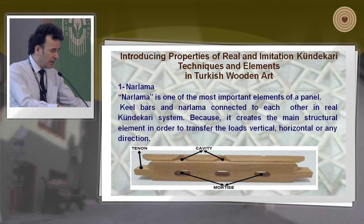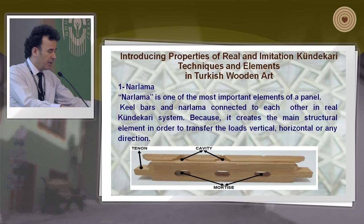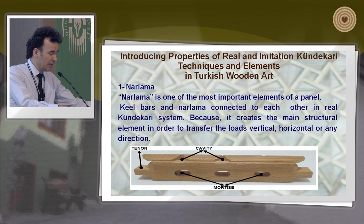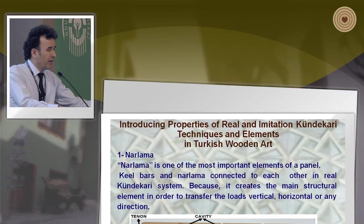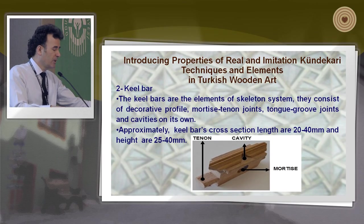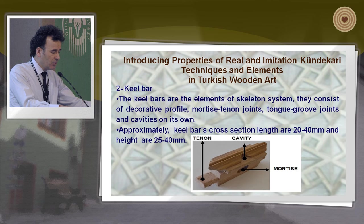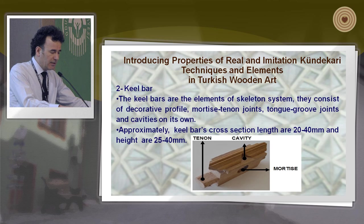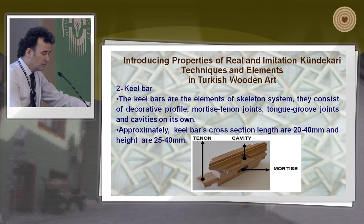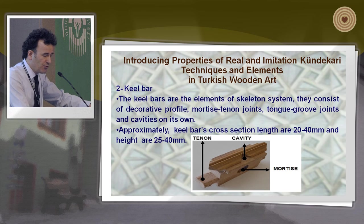Kill bars and narlama are connected to each other in the real Kundakari system because they create the main structural elements to transfer loads vertically, horizontally, or in any direction. Kill bars are the elements of the skeleton system. They consist of a decorative profile, mortise and tenon, tongue, groove, joint, and cavity.